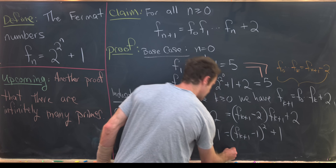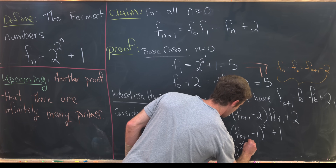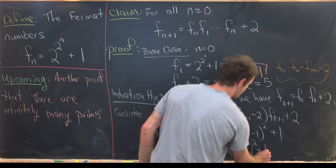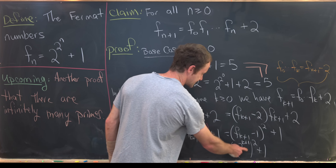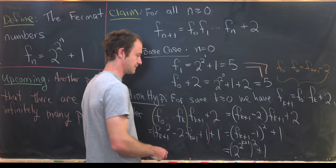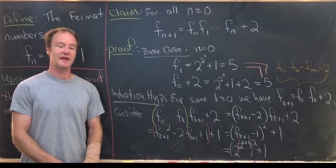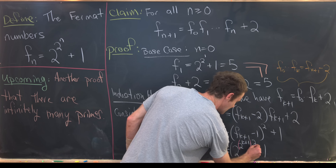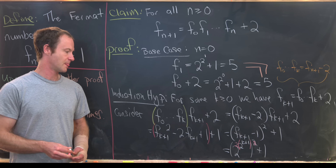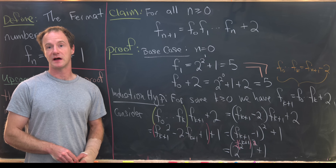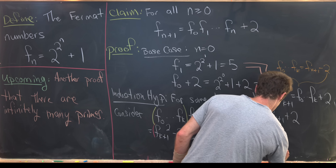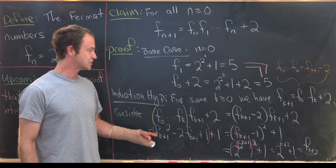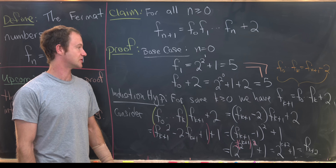Using the definition, F sub k plus 1 equals 2 to the 2 to the k plus 1. Subtracting 1 cancels, and we square that, then add 1. Using exponent rules carefully, raising 2 to the 2 to the (k+1) to the second power multiplies the exponents, adding exponents of 2 to the 1 inside, giving 2 to the k plus 2, plus 1 — which is exactly F sub k plus 2, completing the induction.